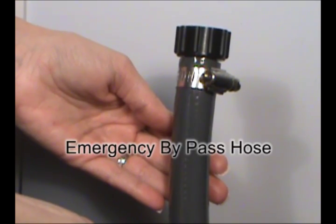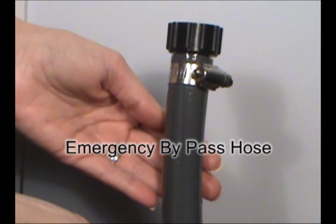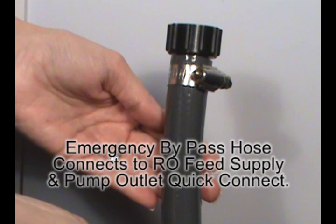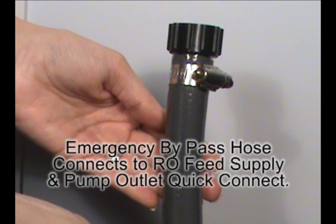An emergency bypass hose is provided in the rare event the system stops and you need to keep water flowing to your machines. The hose connects to the RO feed supply garden hose fitting and to the pump outlet quick connect, temporarily supplying tap water to your equipment.